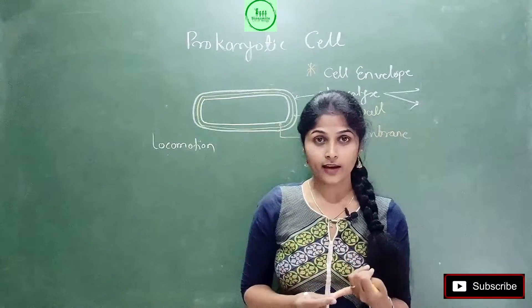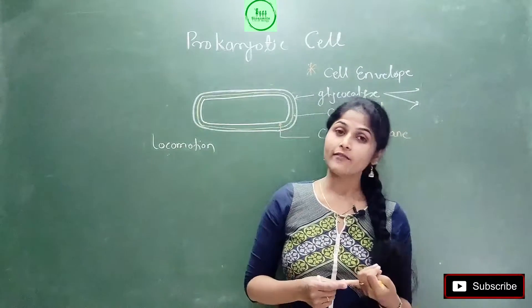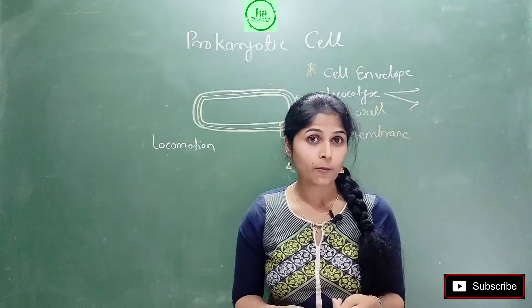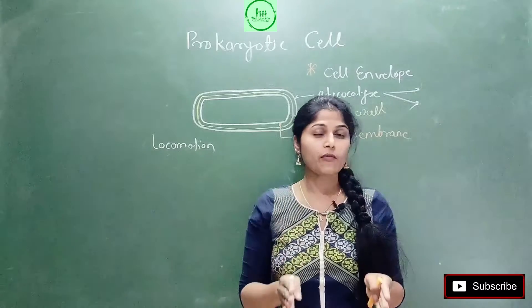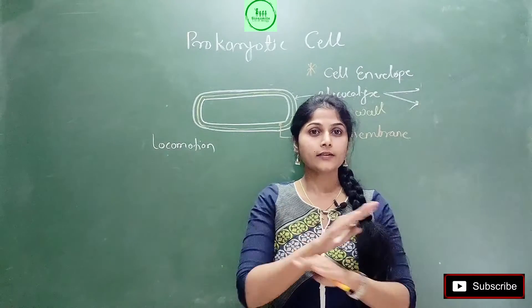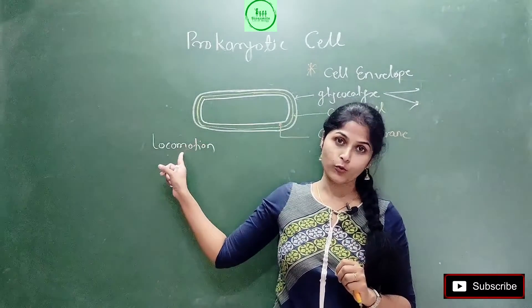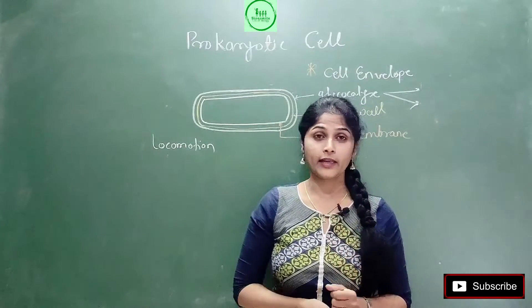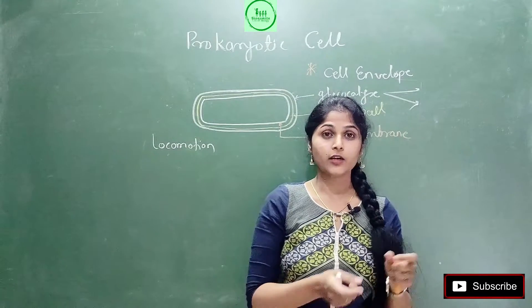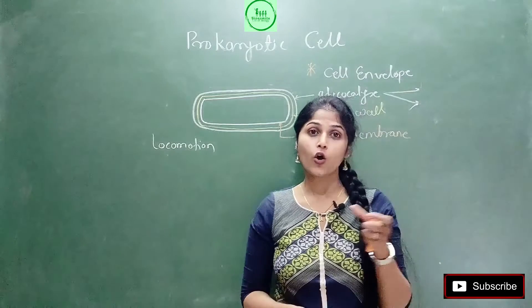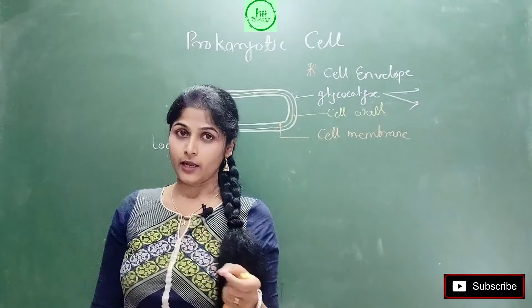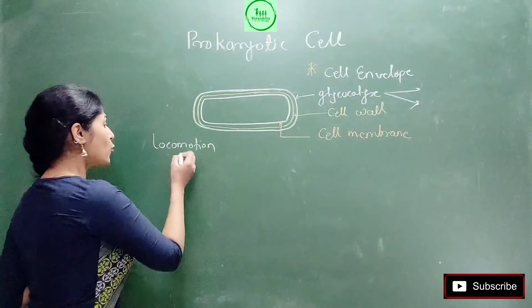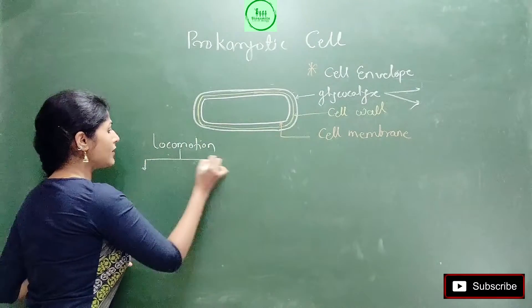We can do locomotion because we have legs. What about plants? Plants can't go from one place to another place - they are fixed in one place. So plants are not having the ability of locomotion. Now what about bacteria - whether bacteria can do locomotion or not?